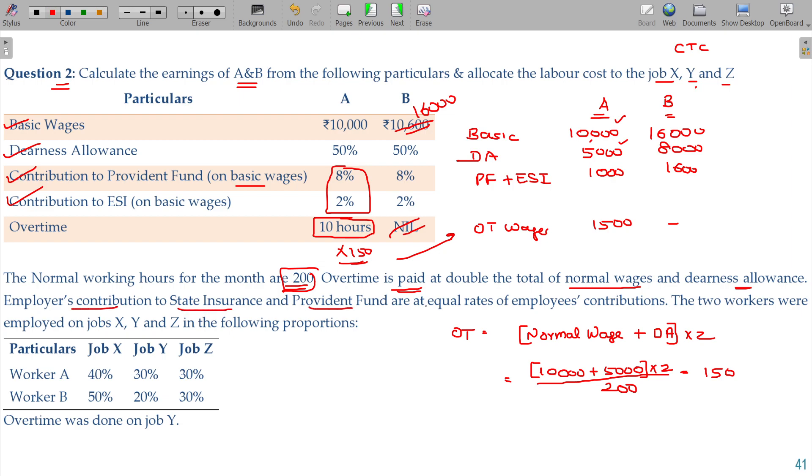Employers contribution to state insurance and provident fund are at equal rates of employees contribution. The two workers were employed on jobs X, Y and Z in the following proportion, in the ratio of the number of jobs. Jobs, X, Y and Z. Worker A and worker B.